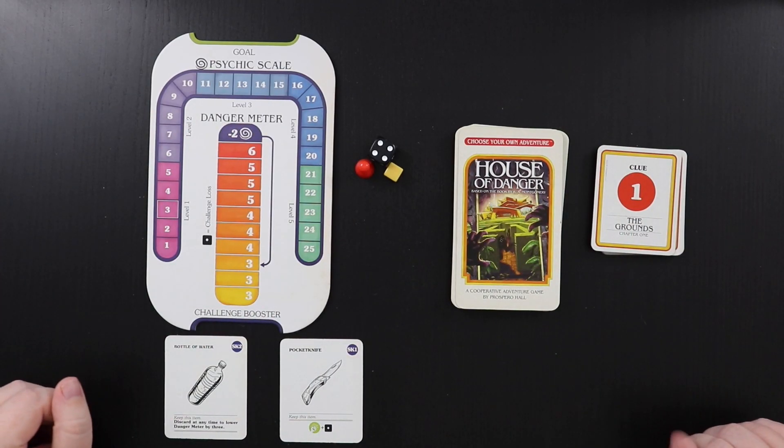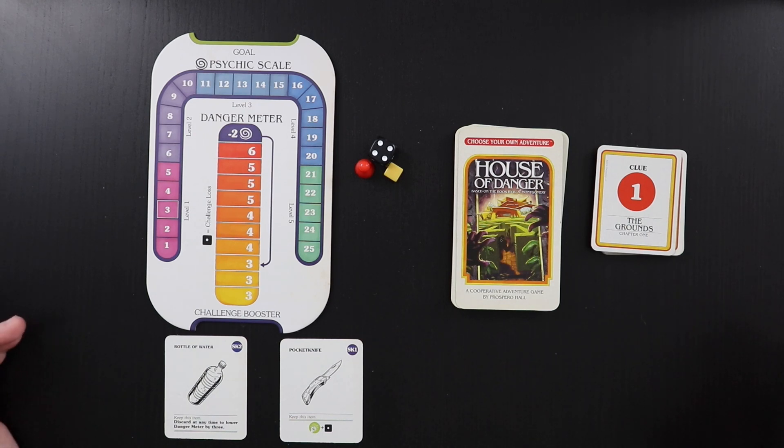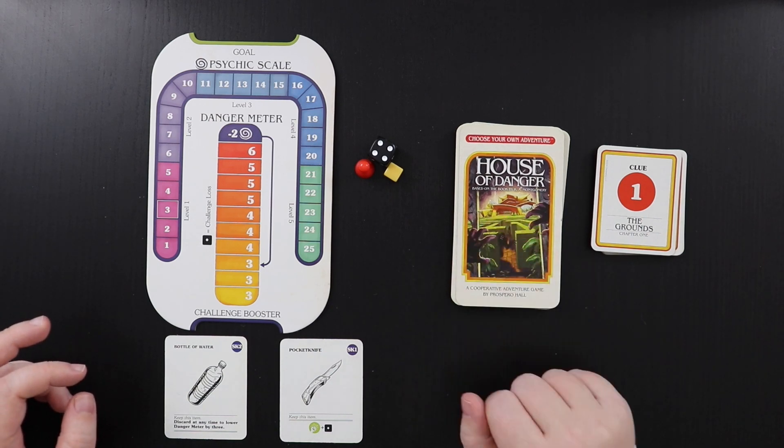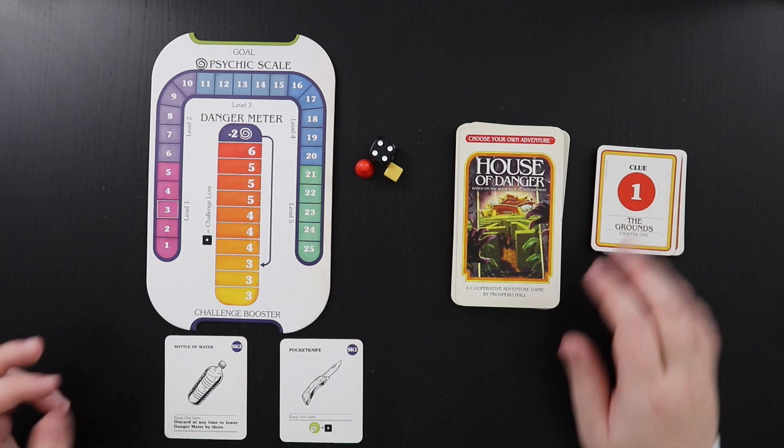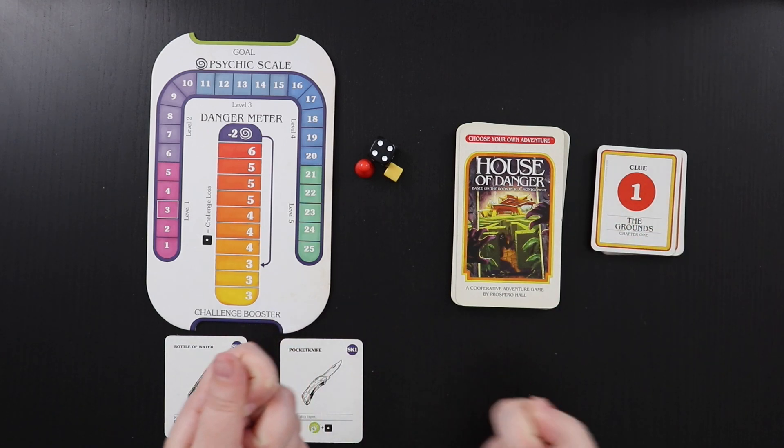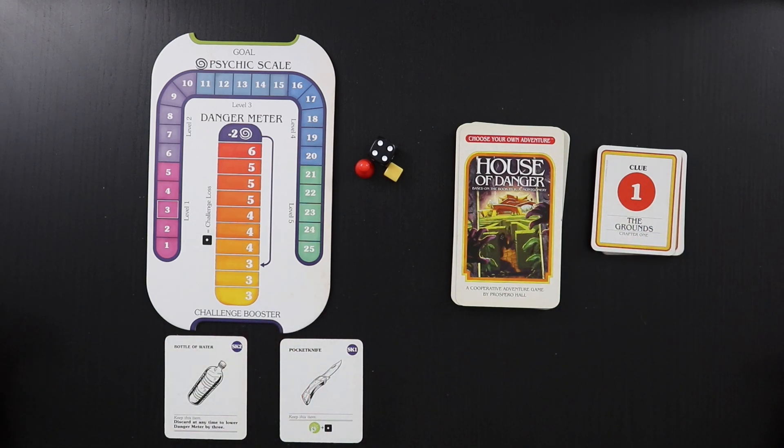So here's all the stuff that you're going to need for your first game of House of Danger. There are actually five chapters in the game's story. One thing that's sort of convenient, if probably horrible for the environment, is that each of the chapters is bagged in its own separate shrink-wrapped deck, so you can actually just pull out what you need for that session the first time you play it.